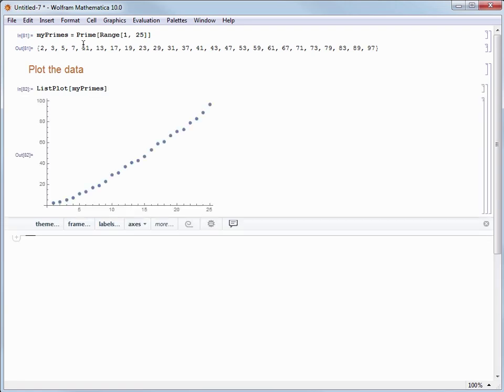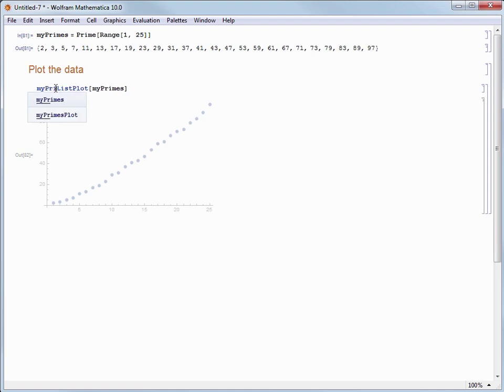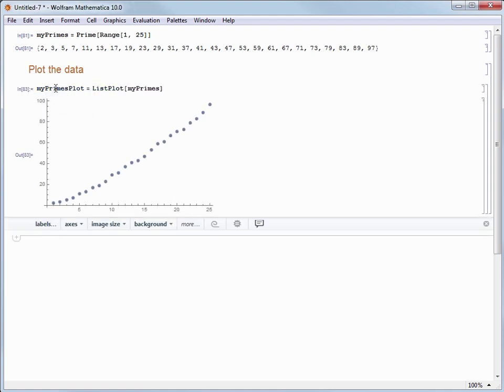I have a feeling I want to refer back to this plotted result later on. So I'm going to create one more variable called my primes plot and then equal sign to assign it to the list plot command.